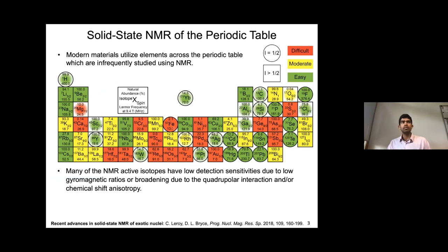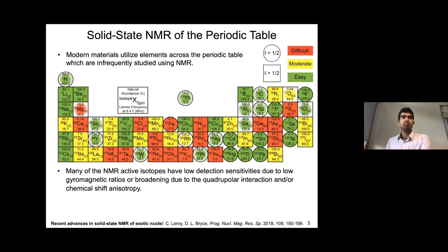When you look at the periodic table and all the NMR-active nuclei in it, you immediately realize that we perform solid-state NMR typically on only a handful of common spin-half nuclei like protons, carbon, fluorine, N15, phosphorus, silicon, and so on. But most nuclei across the periodic table are very infrequently studied using NMR, primarily because most of these nuclei have very low detection sensitivities.